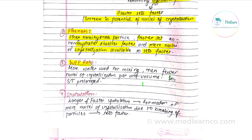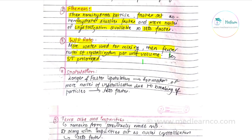Third factor is water/powder ratio. More water used during mixing means there will be fewer nuclei of crystallization per unit volume. Because nuclei of crystallization per unit volume are reduced, the setting time is prolonged. So water/powder ratio has a significant effect on setting time.